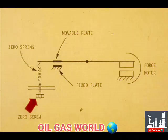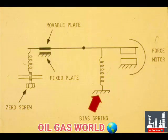A zero adjustment can be effected by using a zero spring and zero screw. By increasing or decreasing the spring tension, the output can be synchronized with the true level. The zero spring is opposed by a bias spring. The purpose of the bias spring is to pull the right end of the beam down when the force motor repulsion decreases.